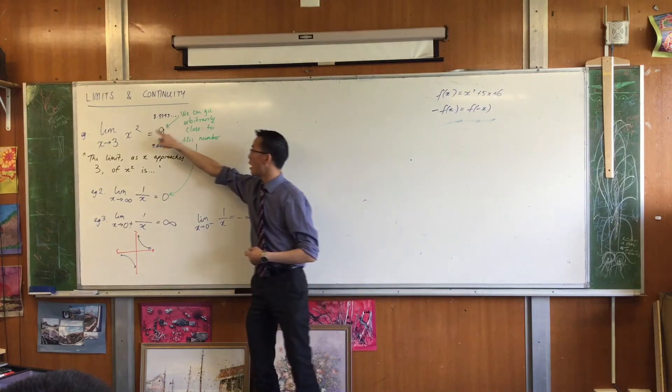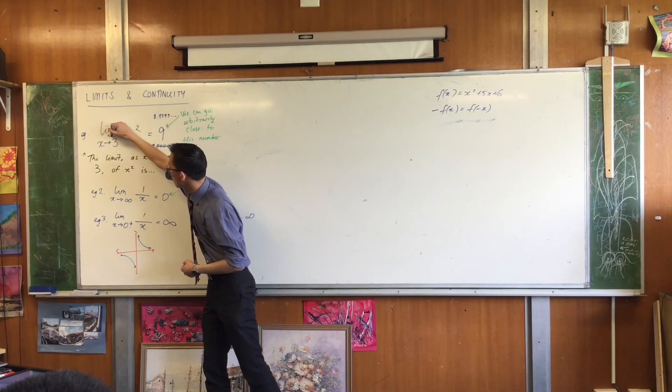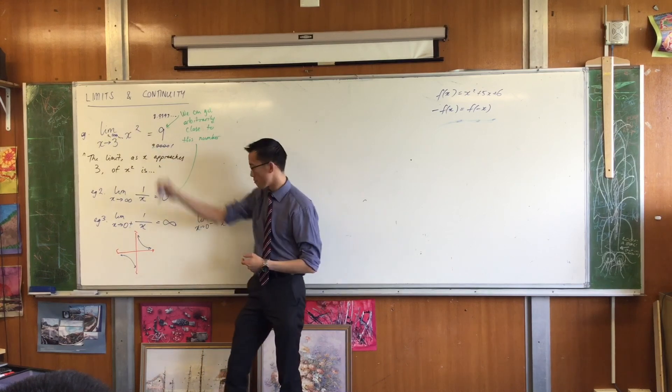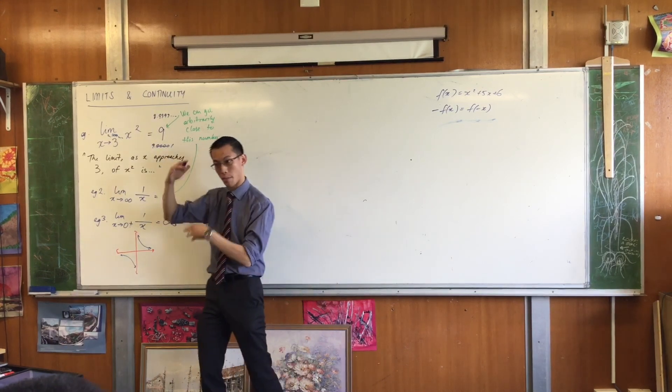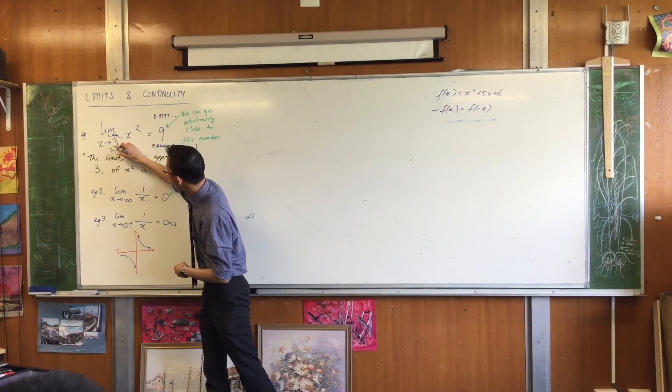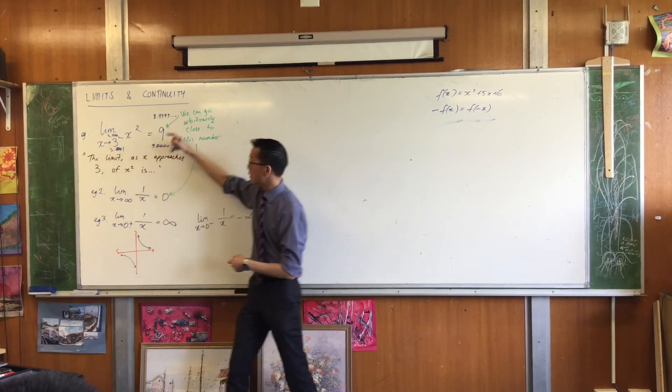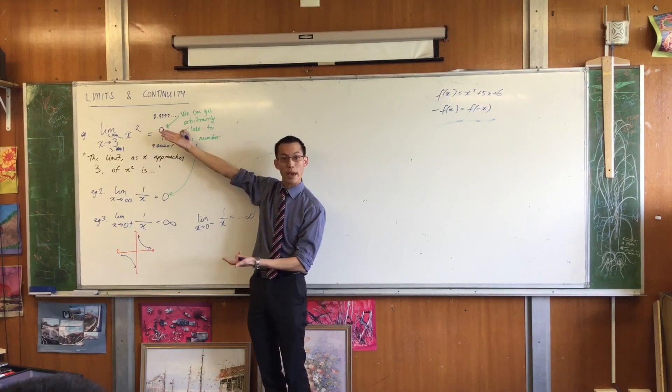So I can approach from... I can approach from below 3, that's one of the ways we say it, rather than from left or right, you can say from above or below, and that will give me these values for x squared. Does that make sense?